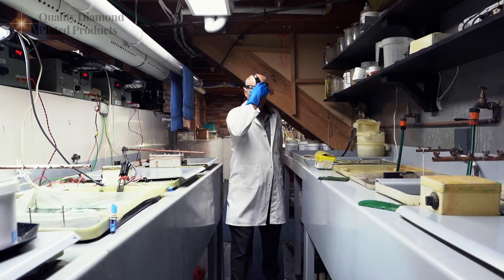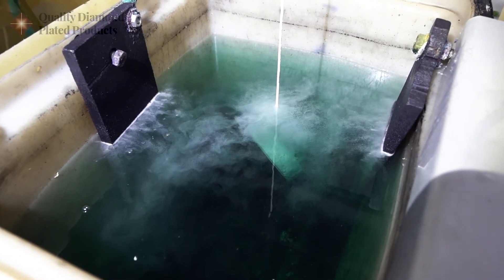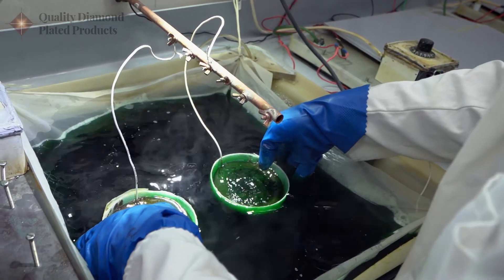Once the diamond is tacked, we then build up a nickel layer around the diamonds embedding 75-80% of the stone into a nickel metal matrix.